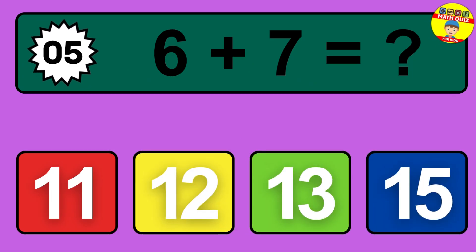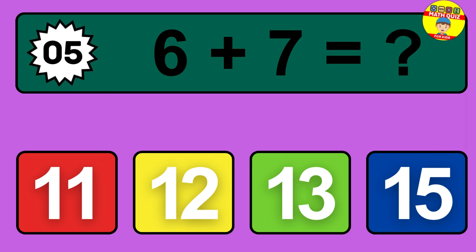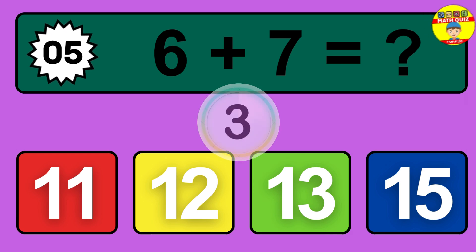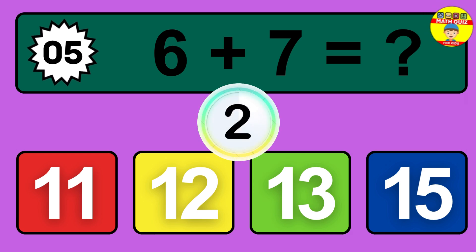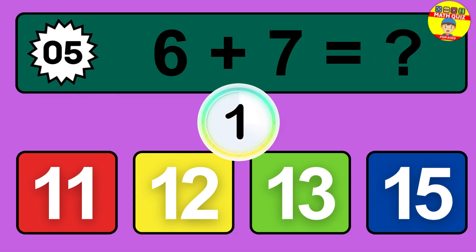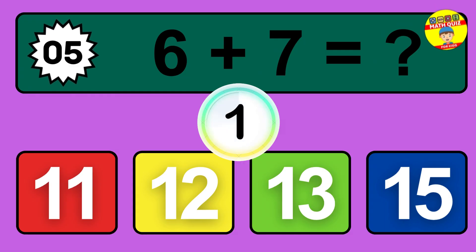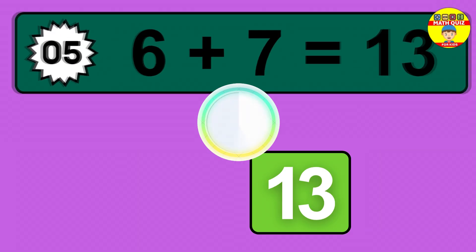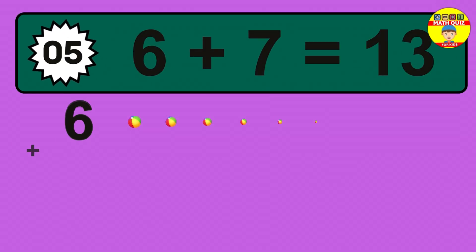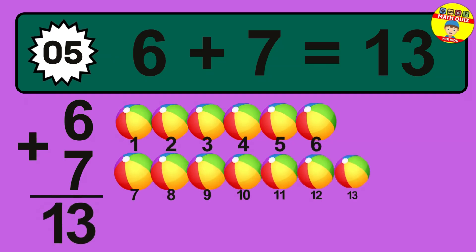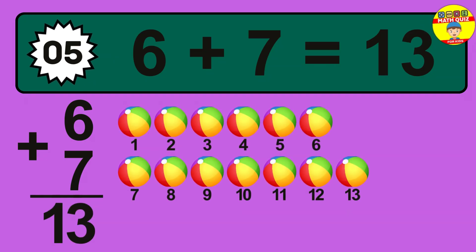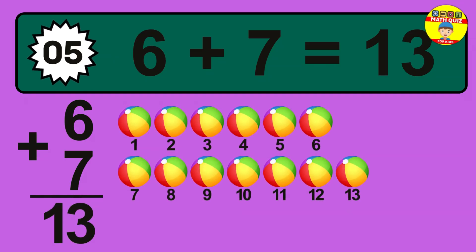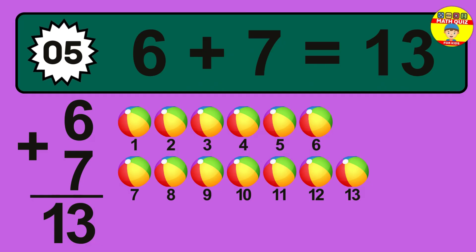Question 5. 6 plus 7 equals what? So the answer is 6 plus 7 is 13. Let's count it.